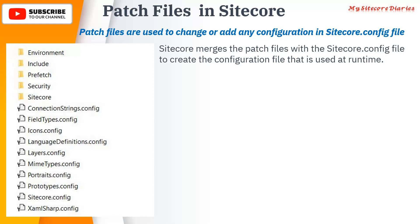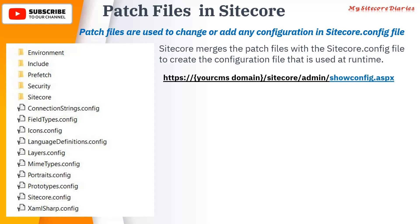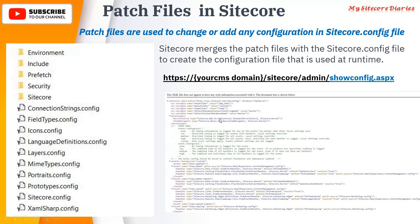Whatever configuration you specify in the patch file will get merged on top of the existing default configuration. Once you've added the patch files, you can see the final merged configuration by visiting your website slash Sitecore slash admin slash showconfig. This will show you the final configuration that is applied on your website. So patch files are configuration files that help you modify the existing or default configuration.